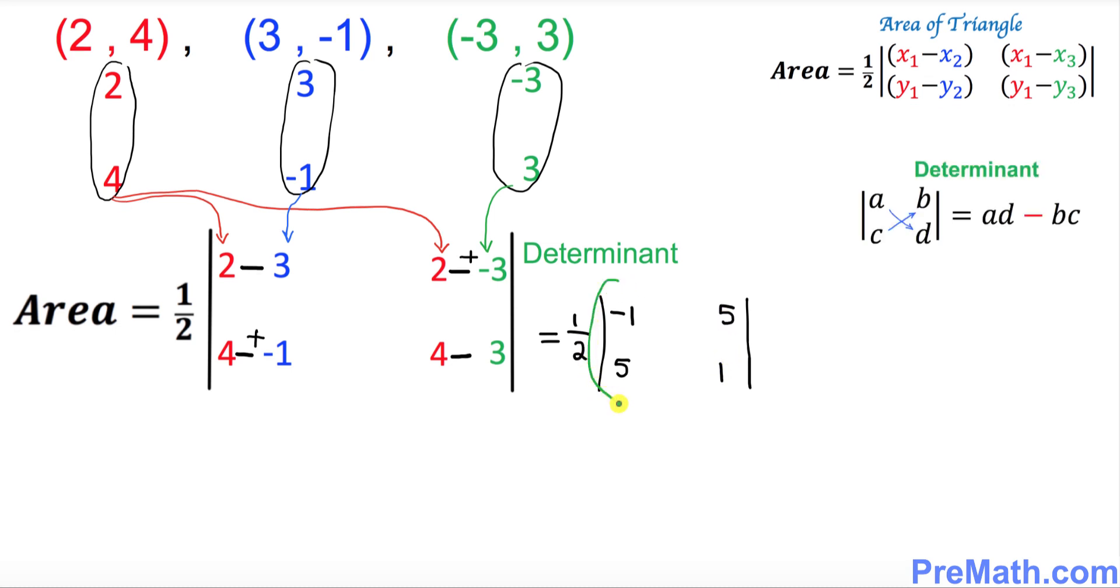Now we're going to find the value of this determinant by using this fact. When you have a determinant with a, b, and c, d, you simply crisscross and multiply across. It becomes a times d minus b times c. I'm going to do the same thing: cross multiply this way. Negative 1 times 1 is negative 1, and right after that put a minus sign, then go the other way around. 5 times 5 is 25, and that makes negative 26.